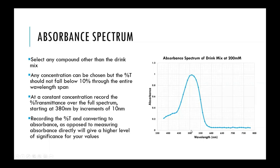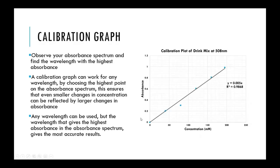Select the same compound you prepared the absorbance spectrum for, select a wavelength, leave that constant, and then choose 10 different concentrations throughout that range and record the percent transmittance. Remember, this is for a calibration plot, so the concentrations must be such that the absorbance is always below one. If the absorbance is above one, the relationship is no longer linear and Beer's Law no longer holds. Make sure any concentrations you choose keep the absorbance below a value of one.